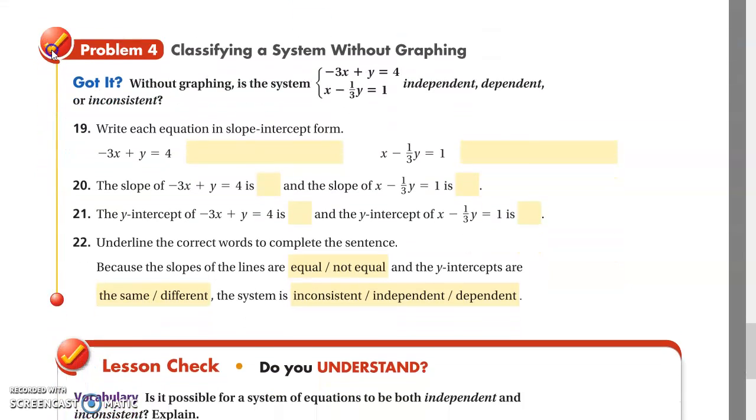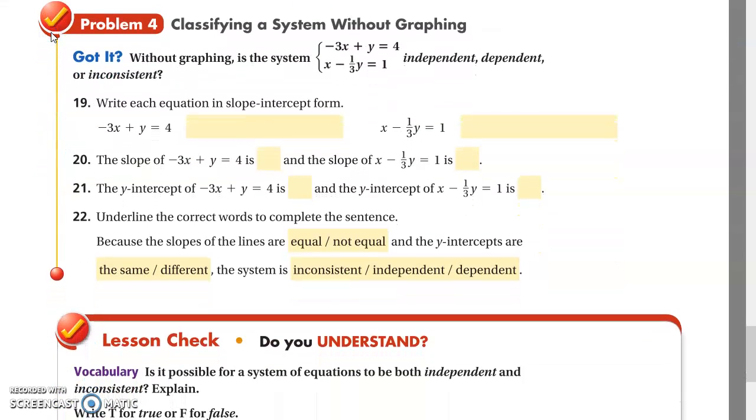Number four, classify the system without graphing. So this is without graphing. Now, turn the page. So you have two equations here, which we've talked about. And independent, dependent, or inconsistent. They're asking you, which one is it? Is it going to be independent, dependent, or inconsistent?